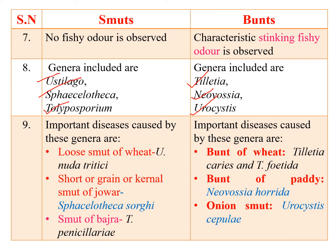The important diseases caused by smut fungi include: loose smut of wheat, caused by Ustilago nuda; short smut, grain smut, or kernel smut of jowar, caused by Sphacelotheca sorghi; and smut of bajra, caused by Tolyposporium penicillariae. In bunt fungi: bunt of wheat is caused by Tilletia caries or Tilletia foetida; bunt disease of paddy is caused by Neovossia horrida; and in onion it is caused by Urocystis cepulae.